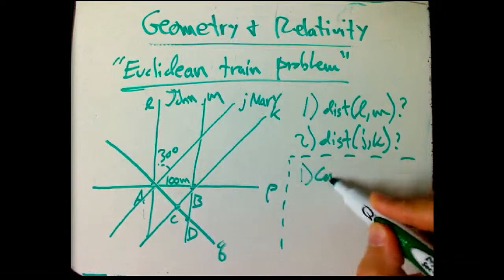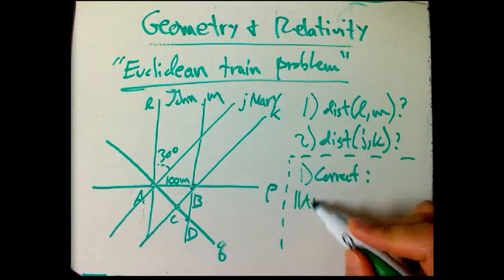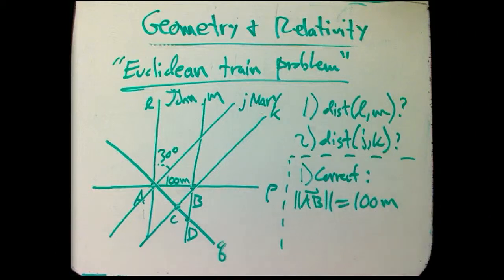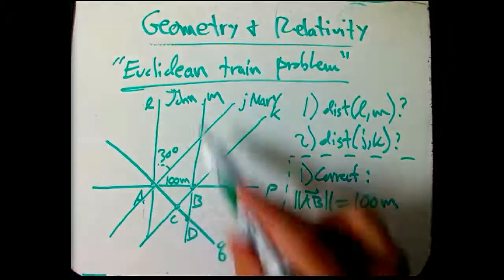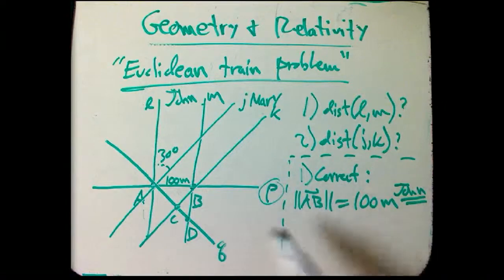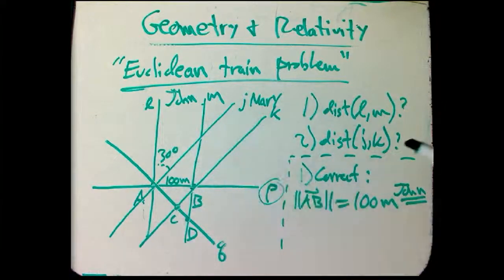So one, the correct answer is the magnitude of AB, which I gave to you as 100 meters. And so since that is a distance between John's lines, John's system does turn out to work for that. Using P was the right thing to do to measure the distance between John's lines because it was orthogonal to John's lines.